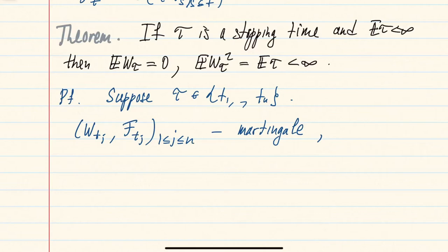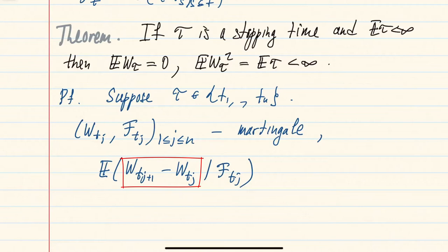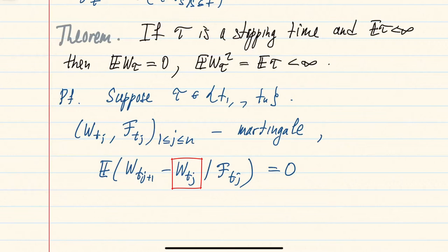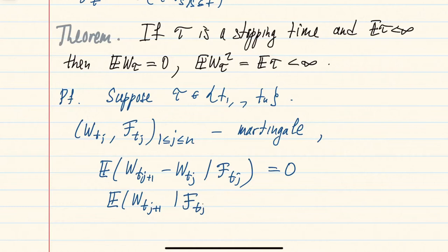Namely, if you consider the expectation of the increment between time j+1 and time j, conditionally on the sigma-algebra at time j, this increment is actually independent of the sigma-algebra. So the conditional expectation is just its unconditional expectation, which is zero. On the other hand, W at time t_j is measurable on the sigma-algebra, so the conditional expectation of W_{t_{j+1}} given F_{t_j} is just W_{t_j}. Indeed, it is a martingale.